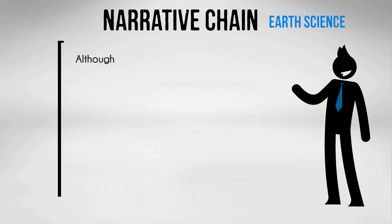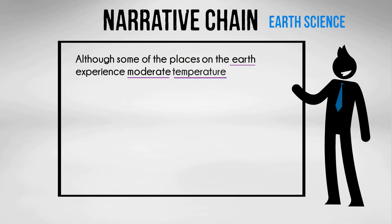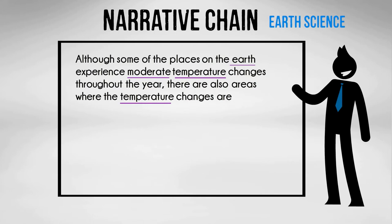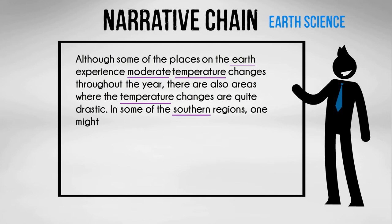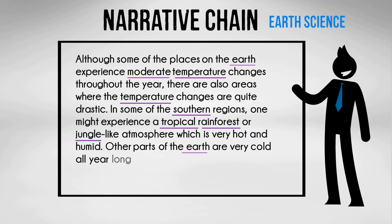Although some of the places on the earth experience moderate temperature changes throughout the year, there are also areas where the temperature changes are quite drastic. In some of the southern regions, one might experience a tropical rainforest or jungle-like atmosphere which is very hot and humid. Other parts of the earth are very cold all year long and are composed of glaciers or ice caps.